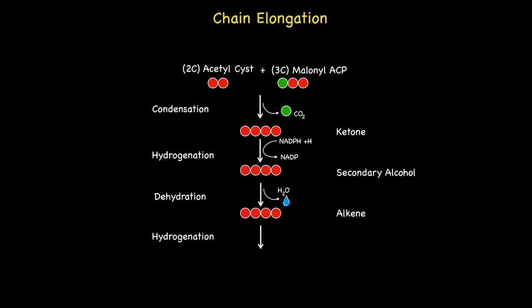Finally, during the fourth step, we observe a second hydrogenation reaction, which removes the double bond to create a four-carbon short-chain saturated fatty acid attached to the cysteine residue. As with the second step, the fourth step requires the presence of the coenzyme NADPH, which in turn is oxidized to give NADP+. This completes the first chain elongation. These steps are then repeated for each preceding chain elongation, increasing the chain length by two carbon units at a time.